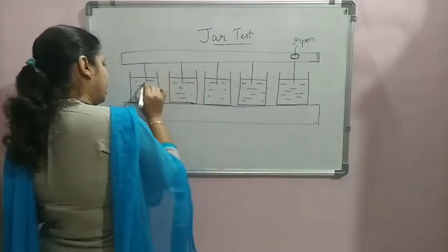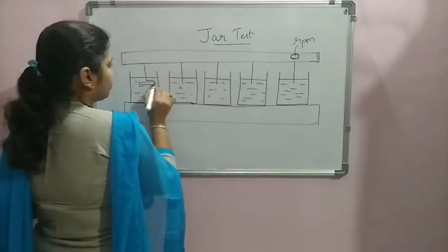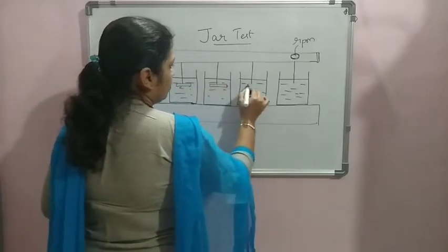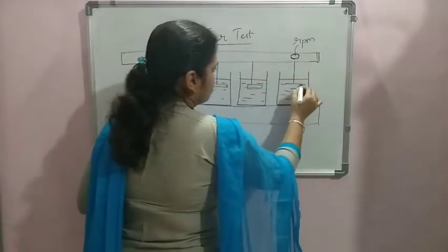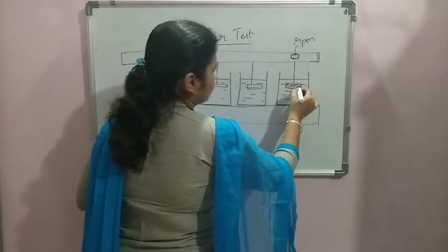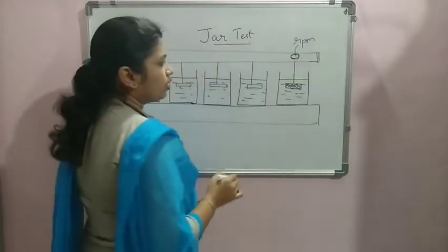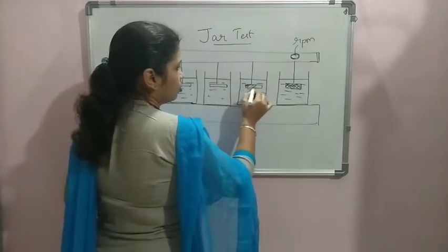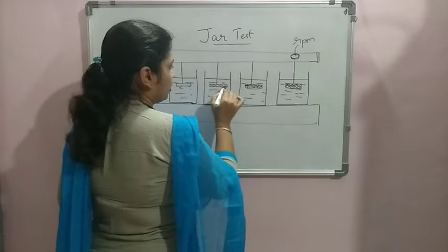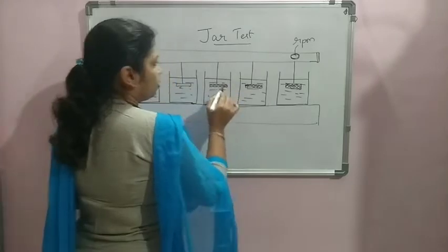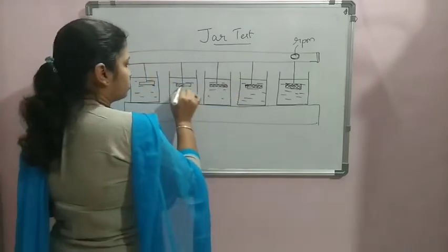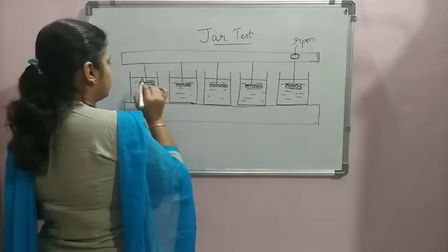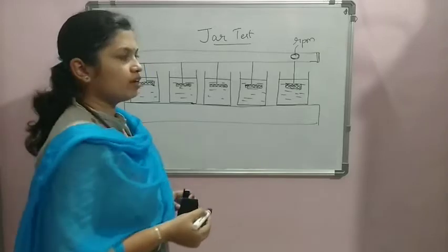Here it will be having each of the rotating paddles. Each of the paddles we have to keep it in such a way that each paddle has to be dipped in each of the jars. These are the rotating paddles. Once we adjust the rotation, with the same velocity these paddles keep rotating.